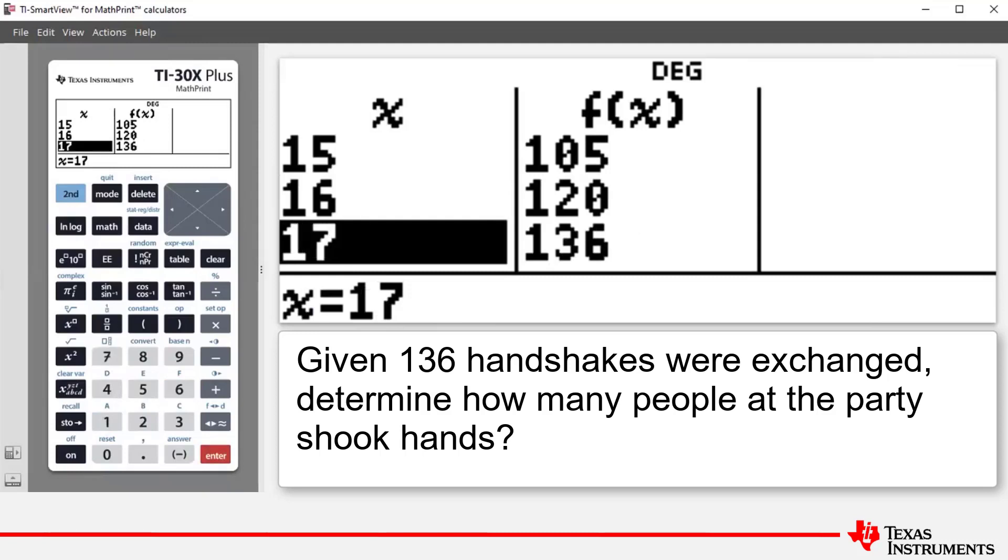So what we've done is we've used the table to solve an equation. We've solved the equation 136 equals x/2 times (x-1) and we've solved for x. And the solution is x equals 17, which means 17 people shook hands and generated 136 handshakes.